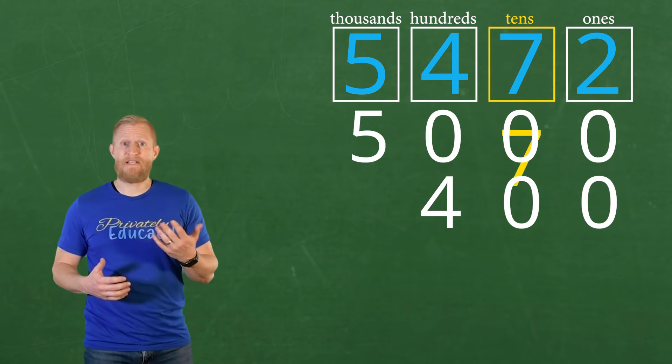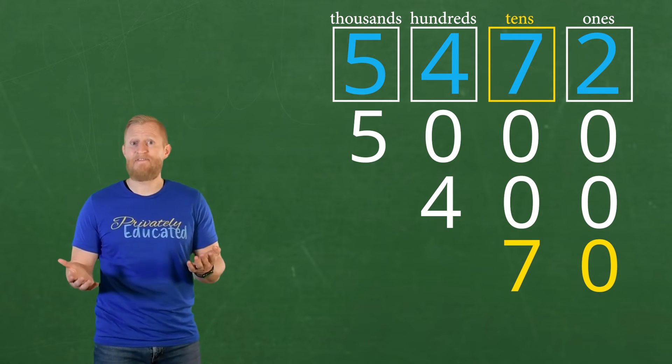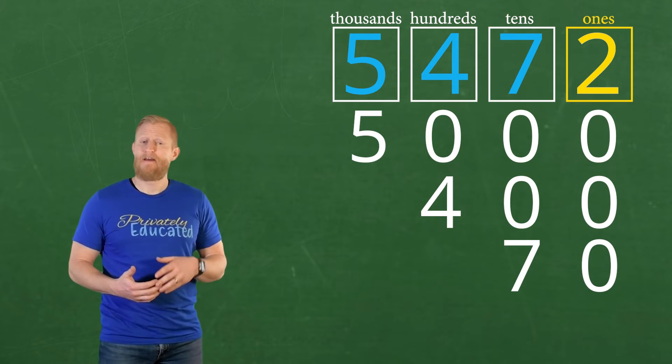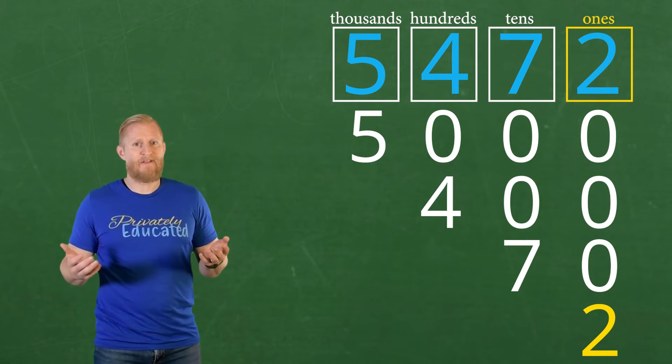Next, we do the same with the tens, giving us 70. And finally, we can bring down the digit in the ones place, which is two in this case.